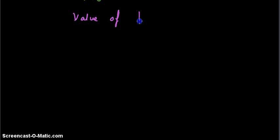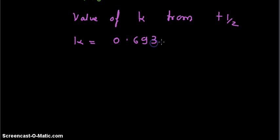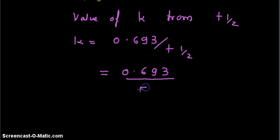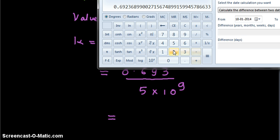The first step is to find the value of k, the decay constant, from the half-life. k is equal to 0.693 divided by half-life, that is equal to 0.693 divided by 5 × 10⁹.